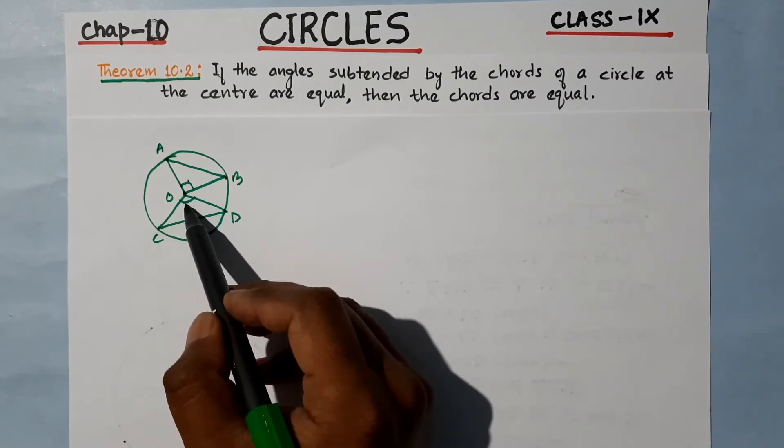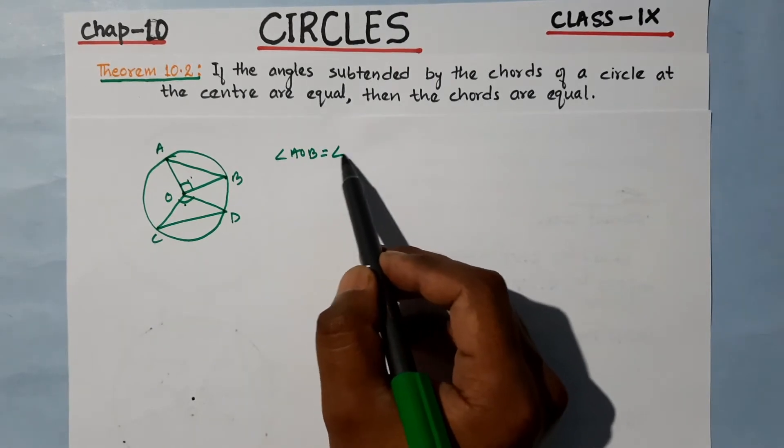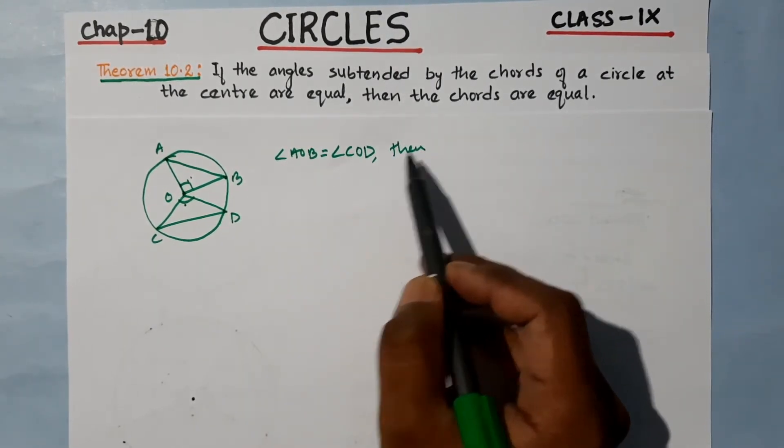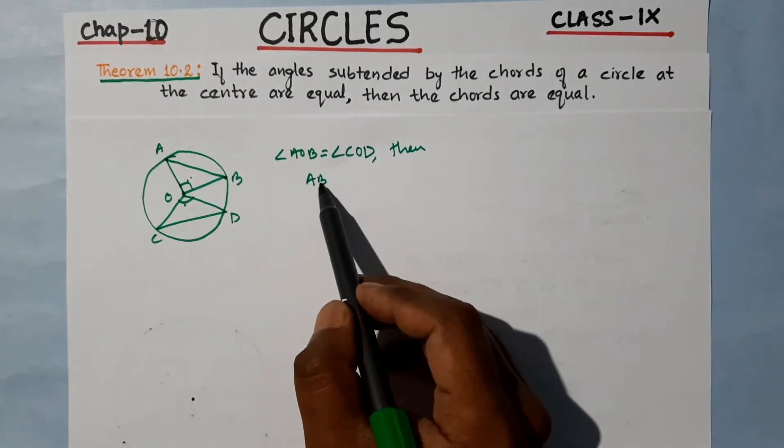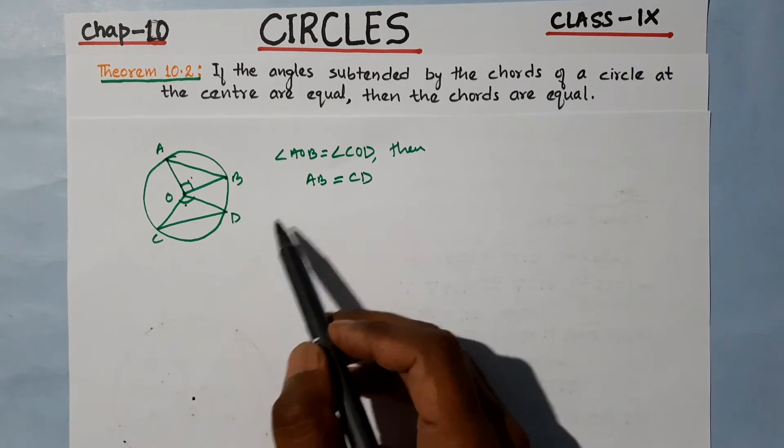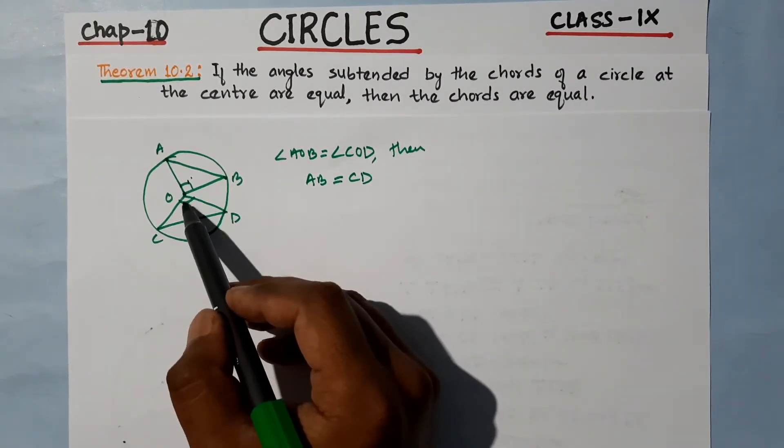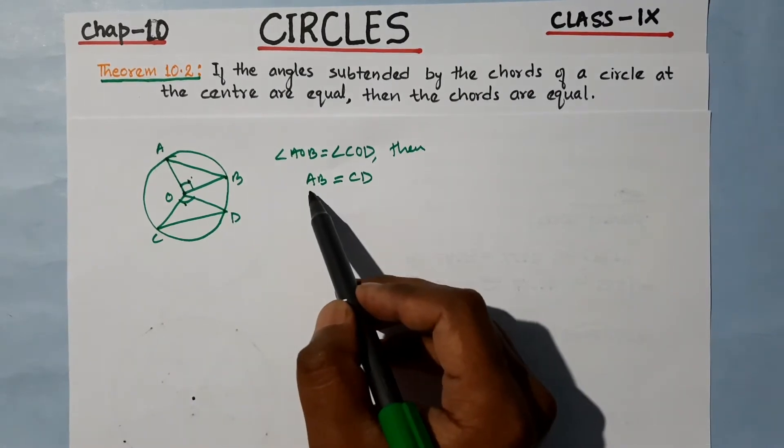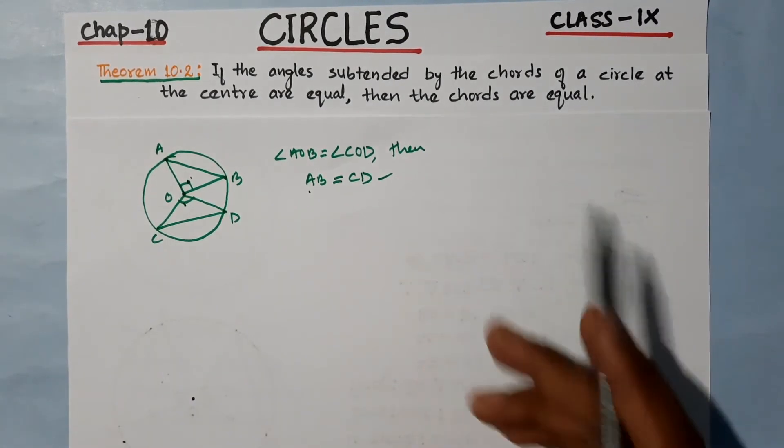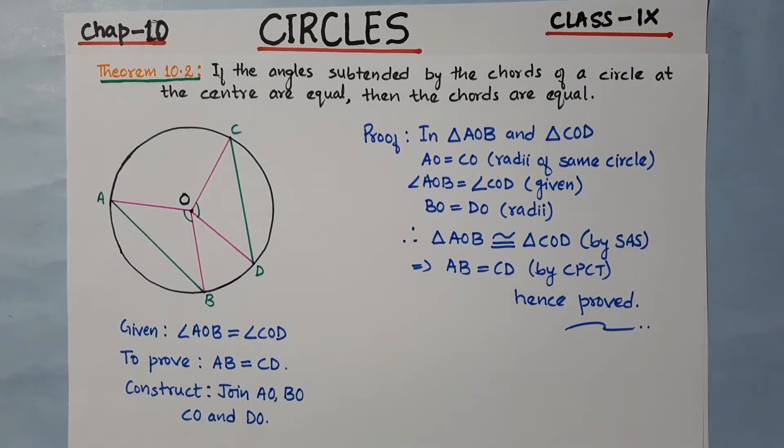If angle AOB equals angle COD, then chord AB must equal chord CD. That's what we need to prove. So let's start the proof.